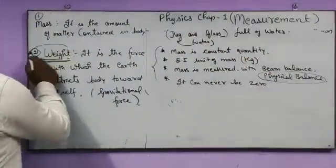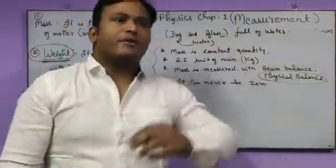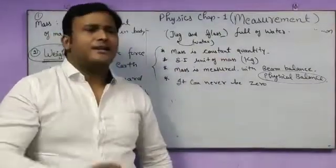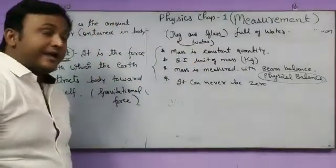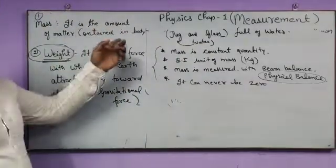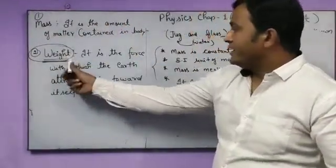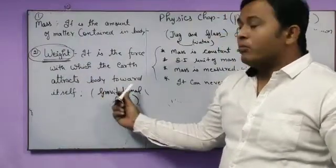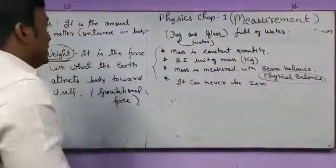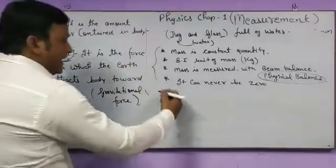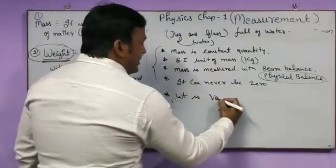Next, coming to Weight. Before moving toward weight, giving the difference between mass and weight. For a common person, mass and weight are the same. But in terms of physics, mass and weight are different. Mass is the amount of matter contained in the body, whereas weight is the force with which the earth attracts body toward itself.